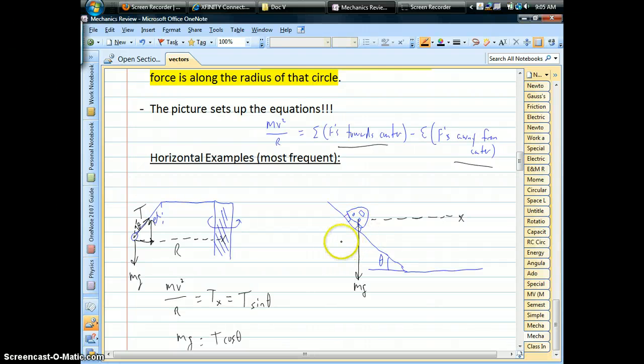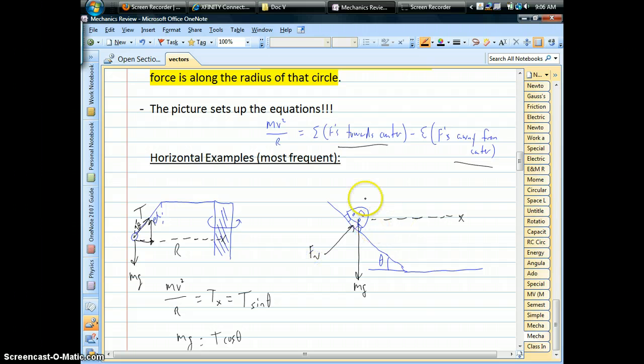The only other force, if we ignore friction, an icy track or something like that, would be our normal force. Because the normal force makes an angle with that horizontal line, that's the one we have to break up. So part of the normal force, we can draw sideways, part of the normal force is going up.